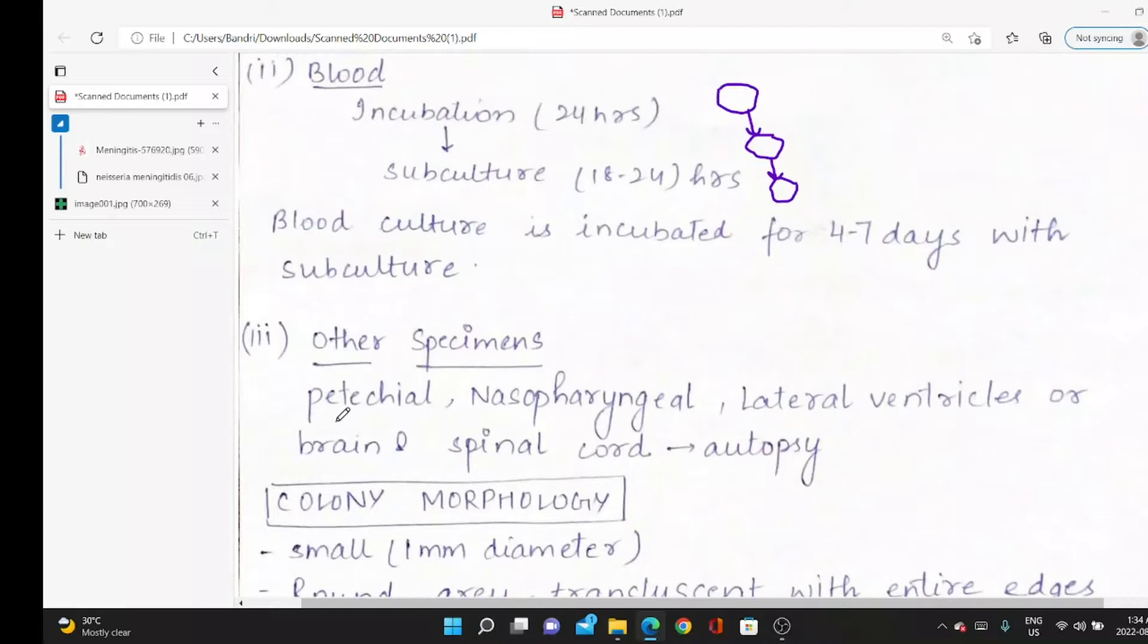Standard sources: petechial lesions, red spots, skin lesions. We can take from there. Nasopharyngeal, brain, and spinal cord. In an autopsy case—if somebody died and we think it's because of meningitis—we can take brain and spinal cord.